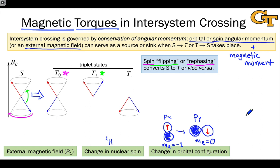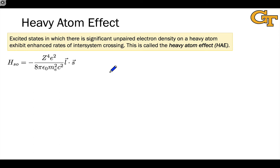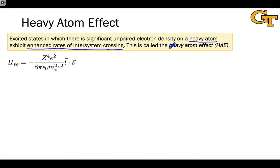This interesting phenomenon allows us to understand how a change in the electron configuration of an excited state — primarily whether it's an nπ* or ππ* state — can be associated with relatively fast intersystem crossing, since it provides a mechanism for spin flip. Before we get there, I should mention an important empirical effect: when an excited state has significant unpaired electron density on a relatively heavy atom, typically third row or below, we see enhanced rates of intersystem crossing. This is referred to in the literature as the heavy atom effect, or HAE.